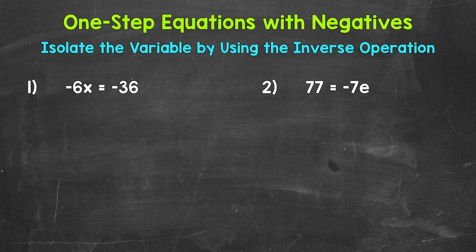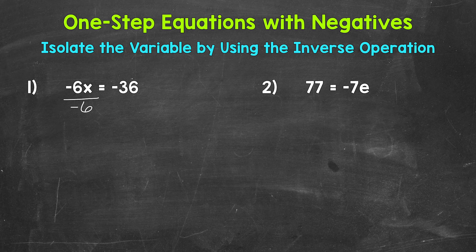We need to isolate the variable x — figure out what x equals. Since x is being multiplied by negative 6, we need to undo that multiplication by using the inverse operation. The opposite of multiplication is division. So let's divide the left side of the equation by negative 6. Whatever we do to one side of the equation, we must do to the other, so let's divide the right side by negative 6 as well. On the left side, we are multiplying by negative 6 and dividing by negative 6, so these negative 6s cancel out.